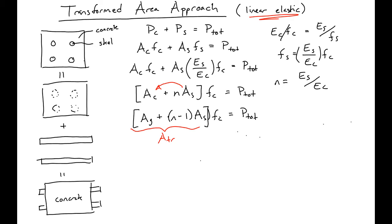If we plug in our relationship for FC using Hooke's Law, we can find that our transformed area times our modulus times the strain in our section equals our total load. This is a straightforward expression that we can use then to find our strain load response, assuming once again that we have linear elastic behavior in both materials.